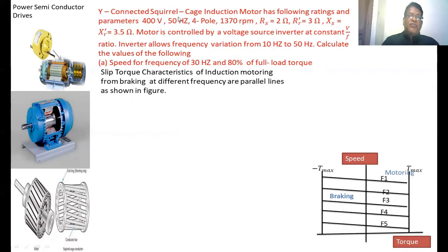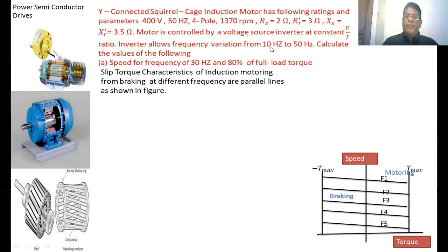Now we look at the second problem: a star-connected induction motor with the following rated parameters — 400V, 50Hz, 3070 RPM. Stator resistance RS = 2 Ohm, rotor resistance referred to stator RR' = 3 Ohm, stator and rotor leakage reactances XS = XR' = 3.5 Ohm. The motor is controlled by a voltage source inverter at a constant V/f ratio. The inverter allows frequency variation from 10 Hz to 50 Hz.